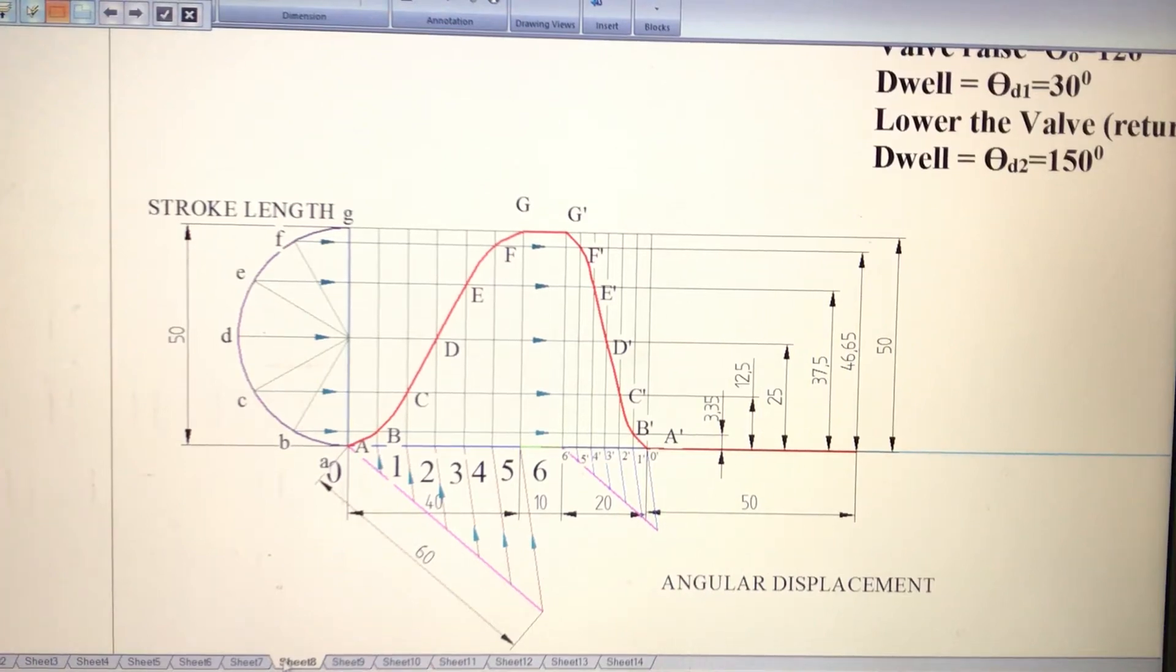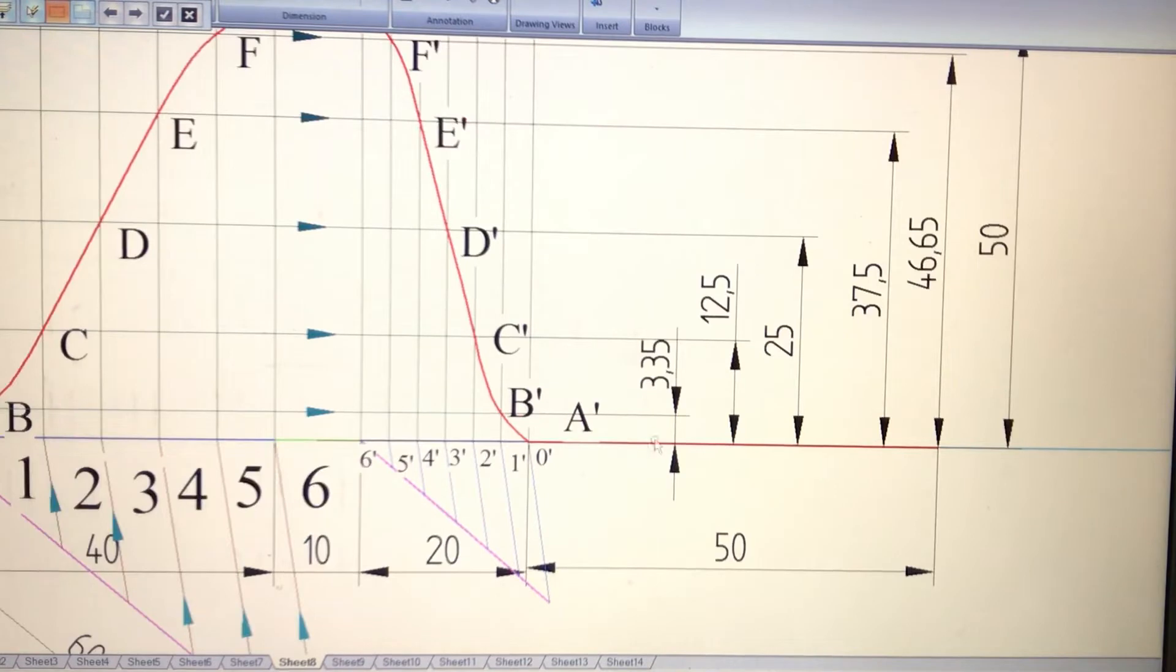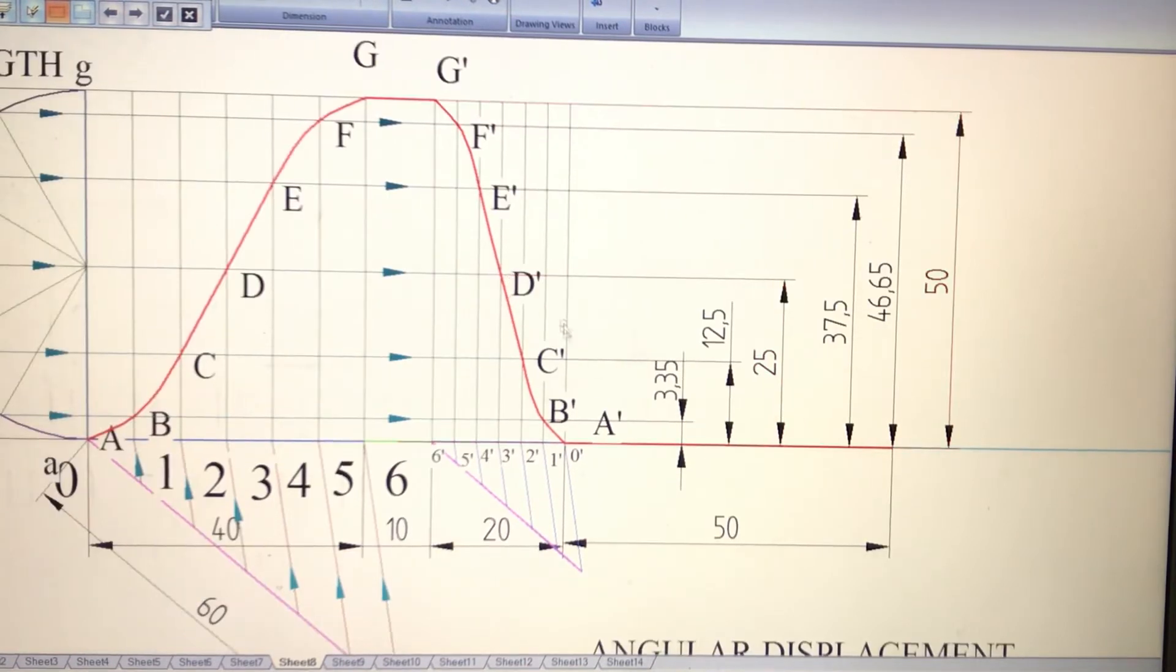Next, we need to create a cam profile. Before moving on to that, in the previous session I forgot to mention the remaining 50 mm is also a dwell - a second dwell after the angle of return.